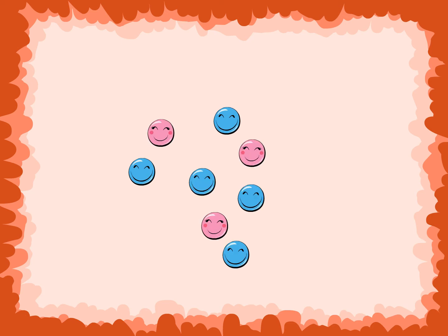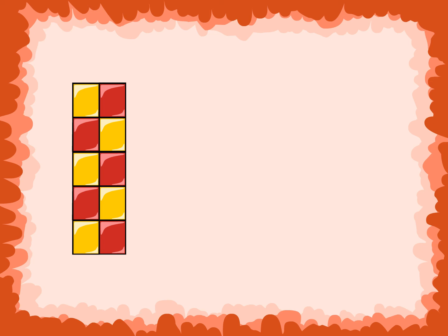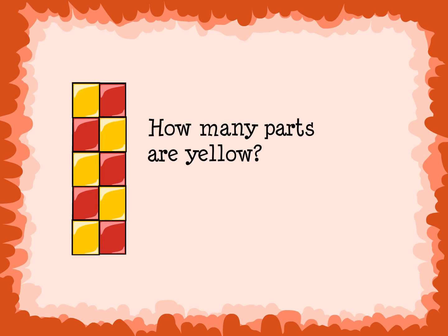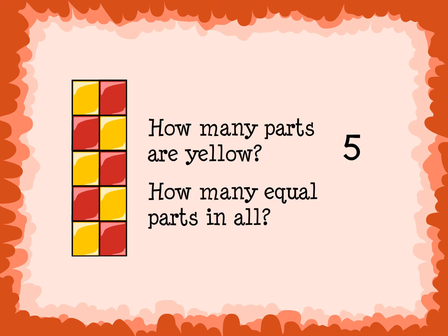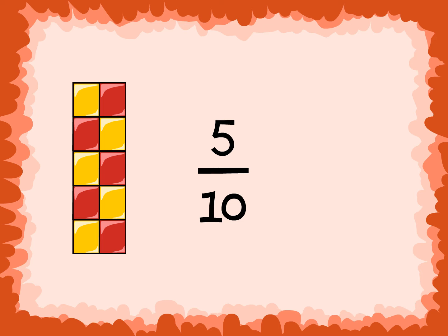Fractions can show more than just one piece of a whole. They can also represent parts of a group. We still use the same three questions as before. Take this rectangle. How many parts of this rectangle are yellow? 5 — which is the numerator. And how many equal parts are there in all? 10 — which is the denominator. What is the fraction for the yellow part of the rectangle? 5 over 10, or 5 tenths.